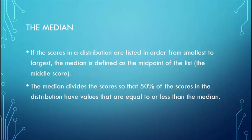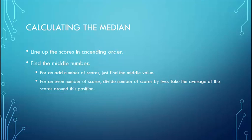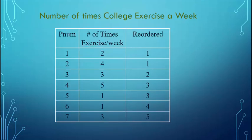Moving on to the median: if you line up your scores in a distribution — you need number or score data here — and list them from smallest to largest, the median is just the middle score. When you have the median, you know that 50% of the scores are below and 50% are above. SPSS will calculate this for you. You would line up the scores in order from smallest to largest and find the middle number. For an odd number of scores, there will be a middle number; for an even number, you take the two middle scores and divide by two.